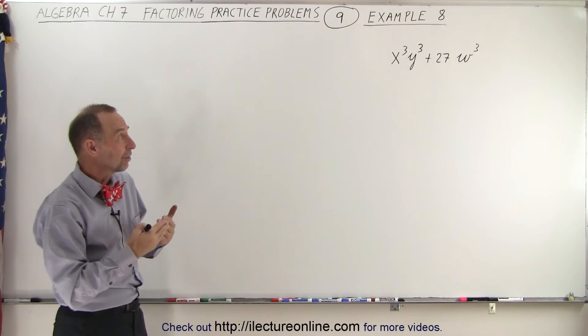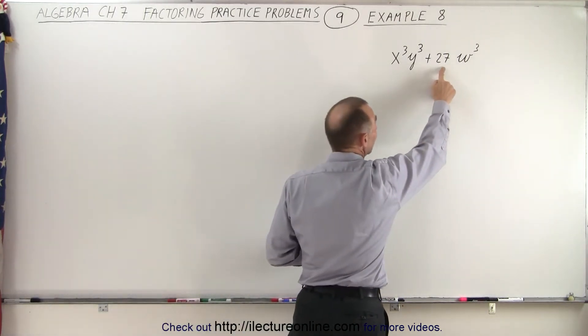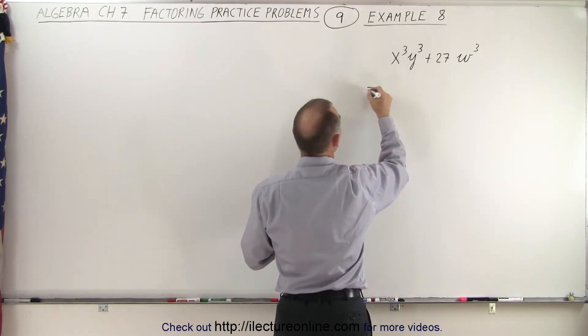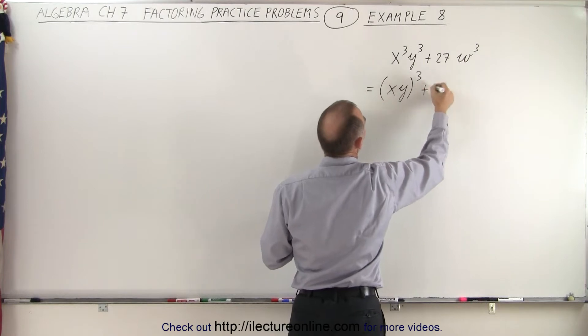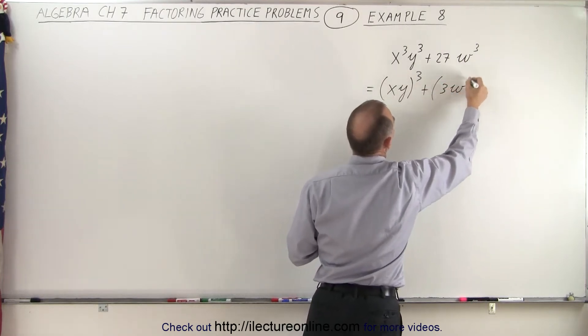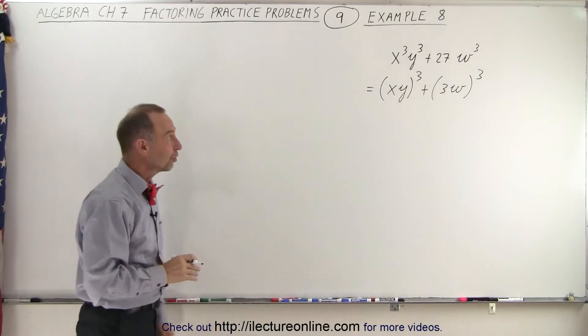That makes us think this may be the sum of cubes. When we realize that 27 can be written as 3 cubed, this can be written as the quantity xy cubed plus the quantity 3w cubed. And now we definitely have the sum of cubes.